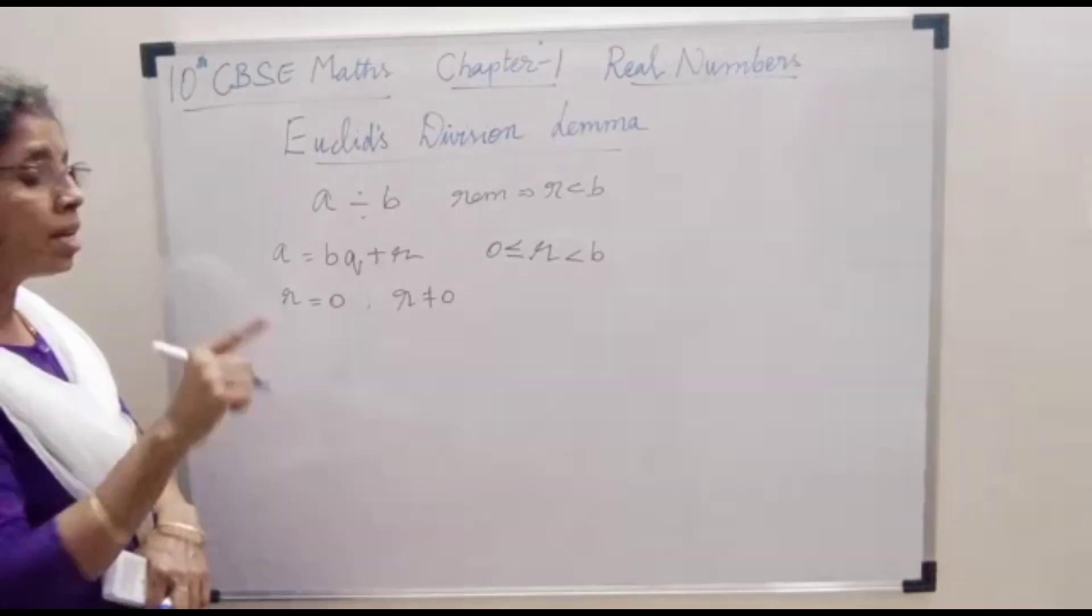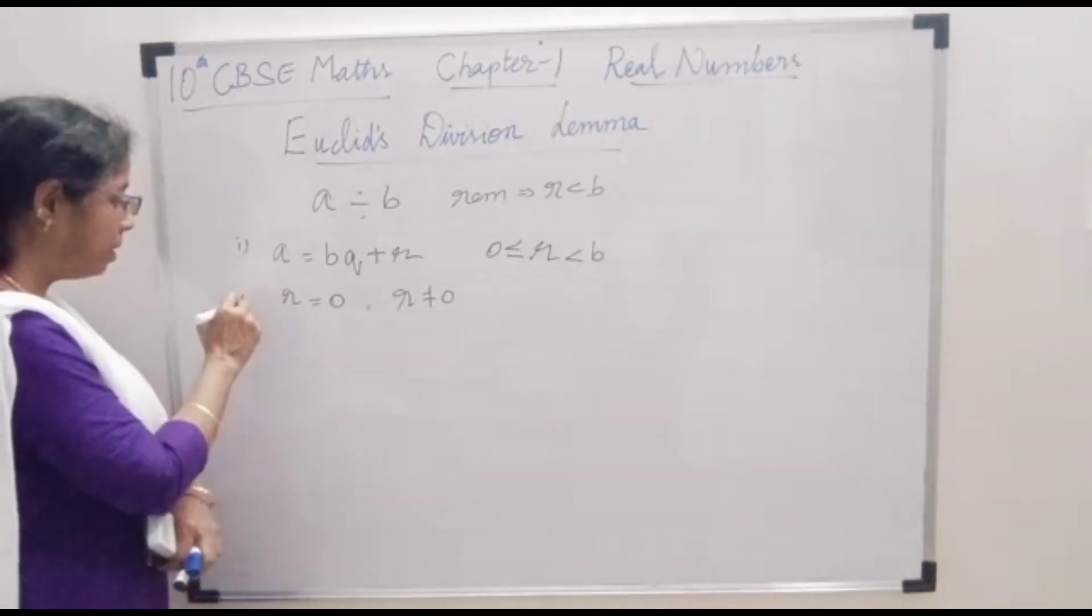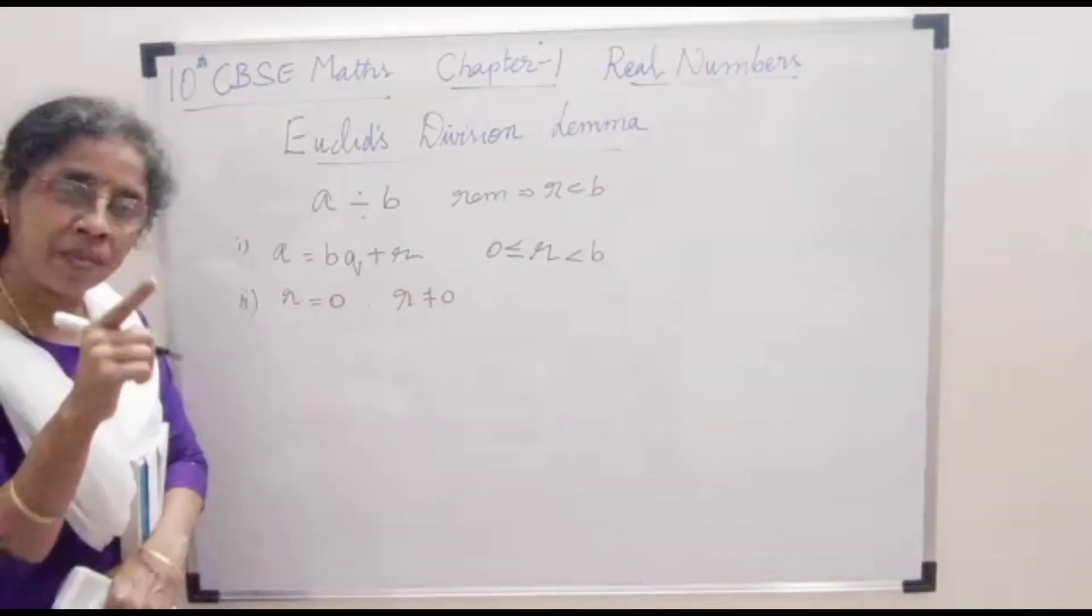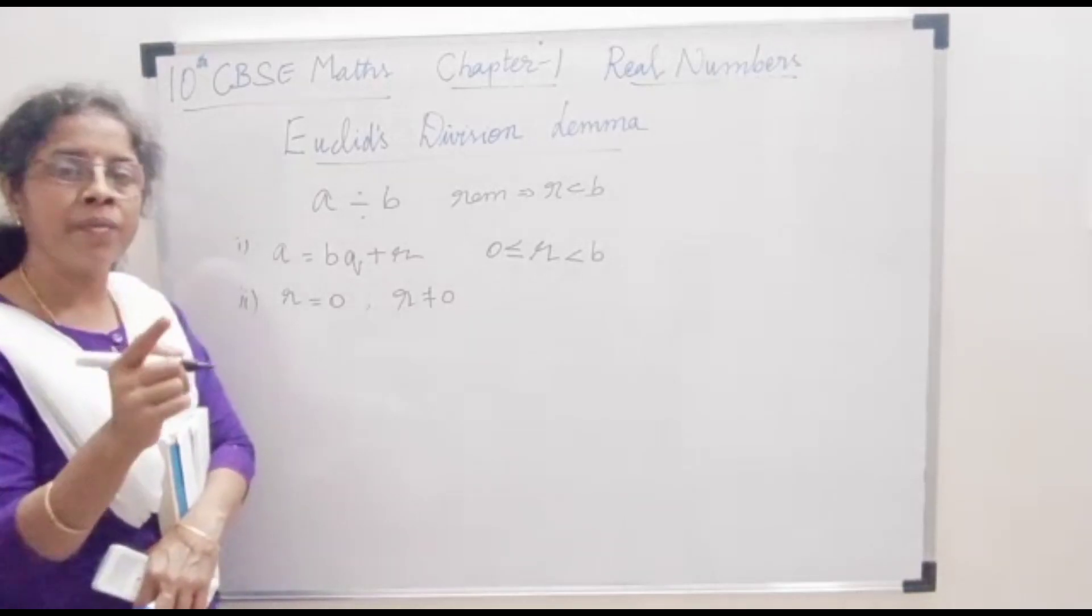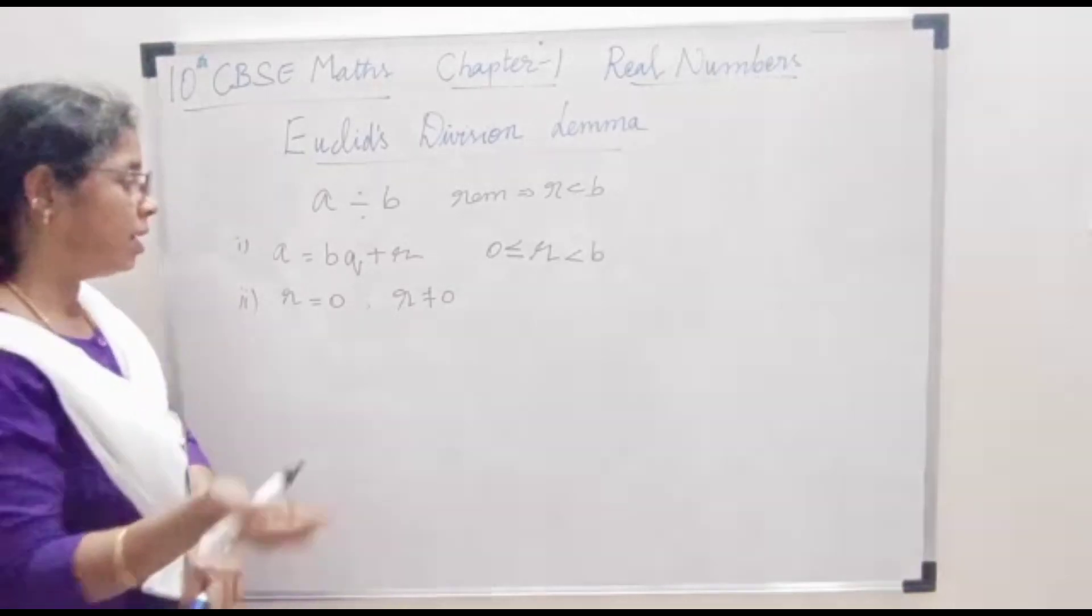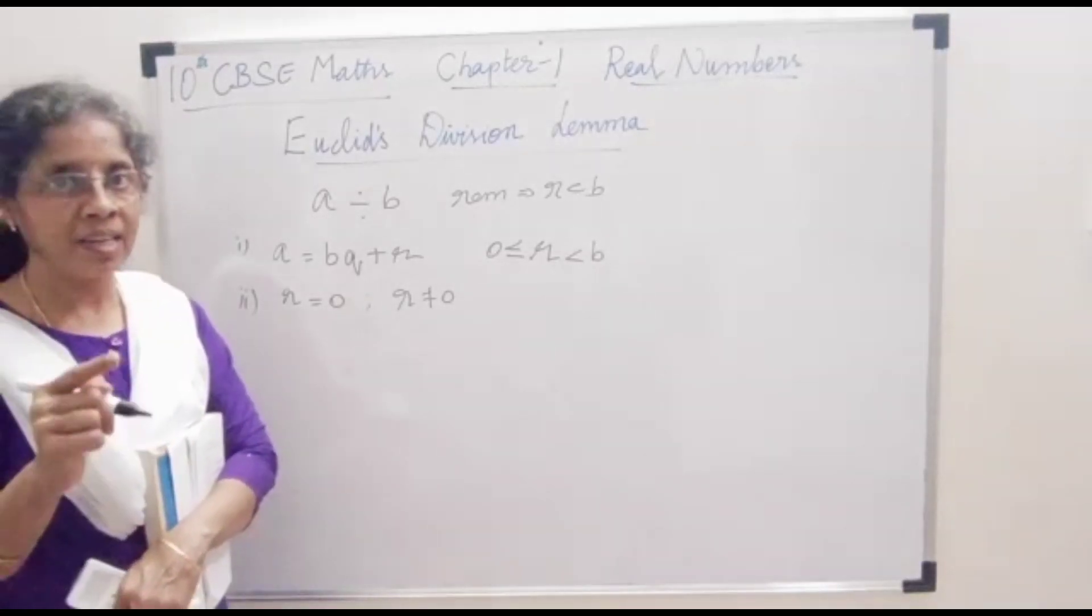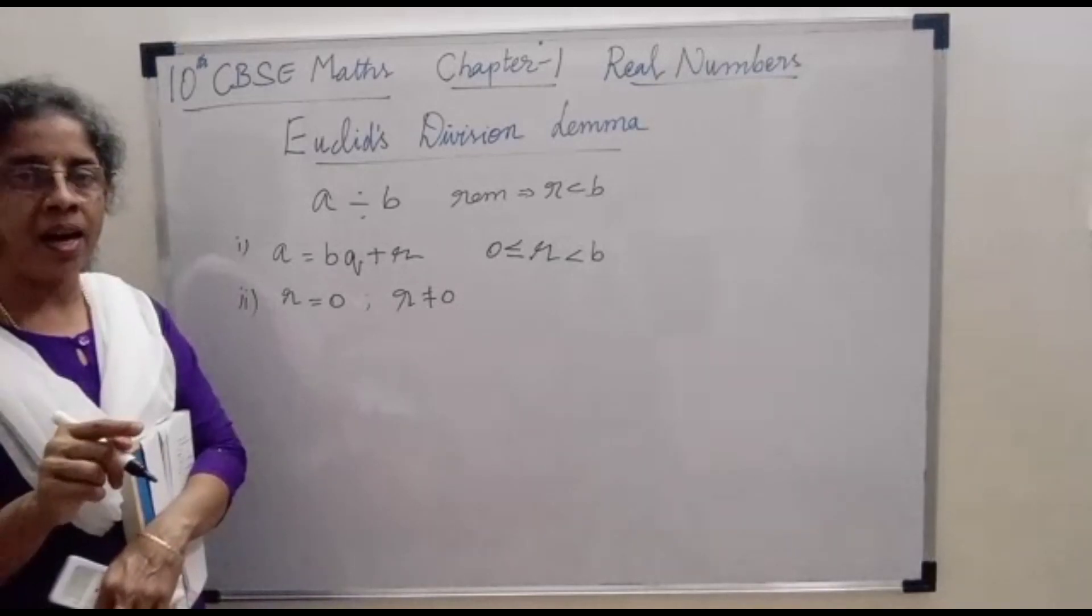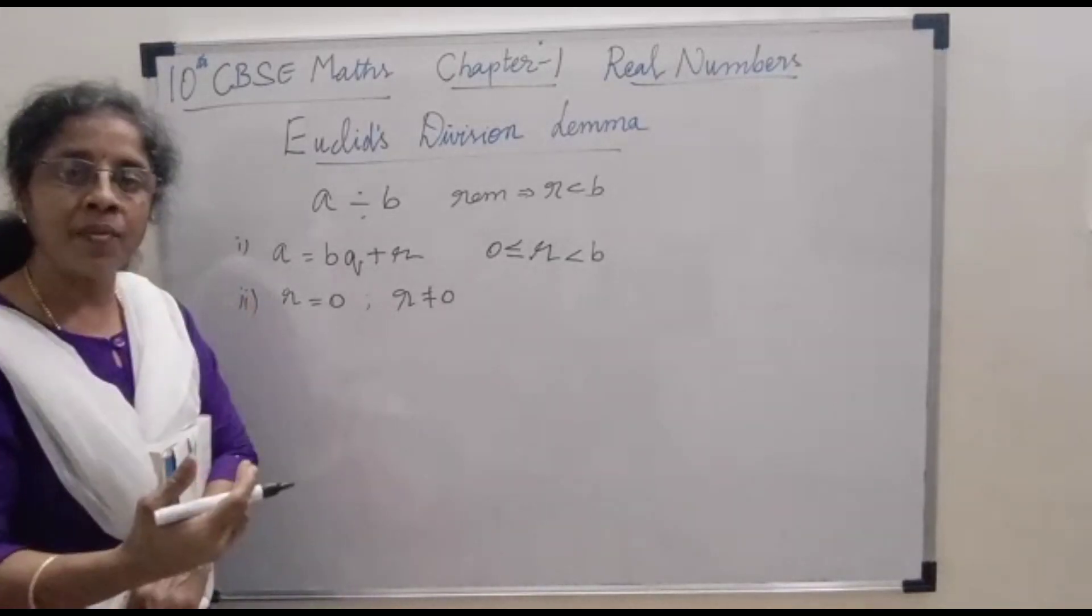First step, you have to write in this form. Second step, if R is equal to 0, the divisor will become the HCF of the given two positive integers. Next step, if R is not equal to 0, the remainder and divisor are swapped.